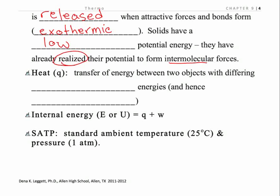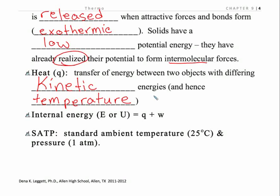We will spend quite a bit of time on kinetic energy and heat energy. Heat energy is the transfer of energy between two objects with differing kinetic energy, and because temperature is a measure of kinetic energy, we look at energy transfer between objects at two different temperatures — two systems or objects that have differing average kinetic energy. Temperature is a measure of that average kinetic energy.